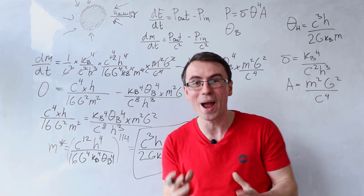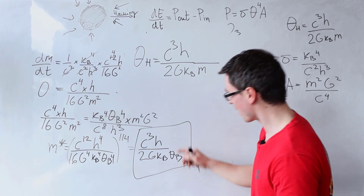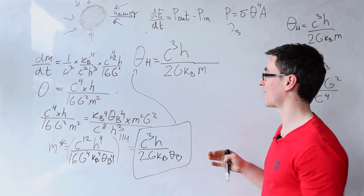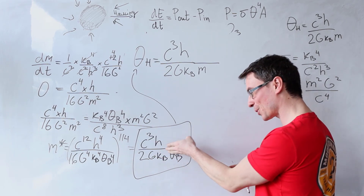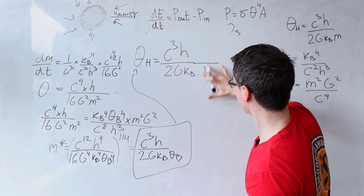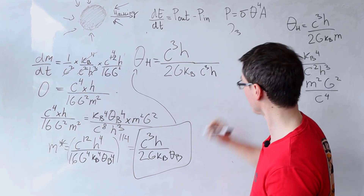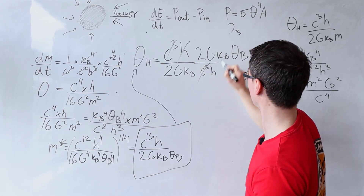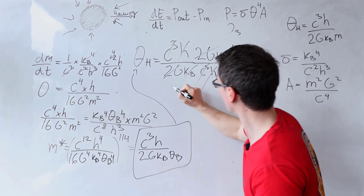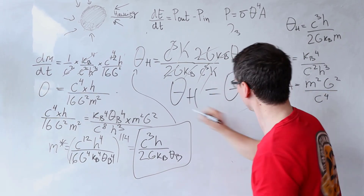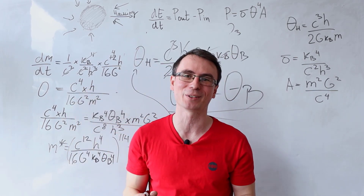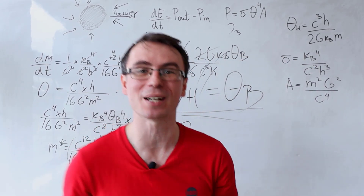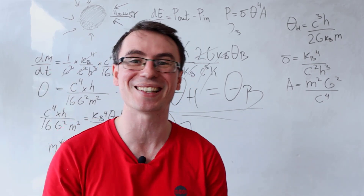Now let me show you something amazing. If I take this expression for M* and plug it into the original expression for the Hawking temperature, we can find the temperature at thermal equilibrium. Substituting M* = c³ h / (2 G k_B θ_B) into the Hawking temperature formula, everything cancels — and what we get is that the temperature of the black hole equals the temperature of the background radiation of outer space. For where the Hawking temperature equation actually comes from, have a look at the derivation for Hawking radiation just over here.